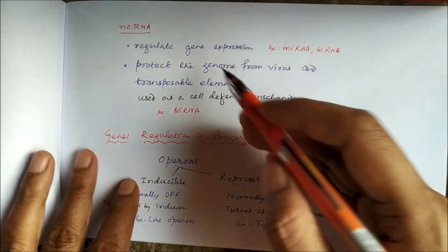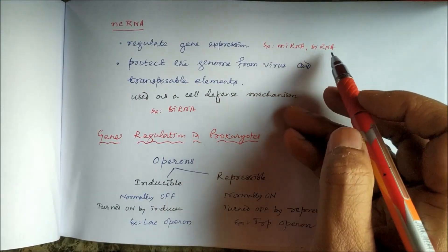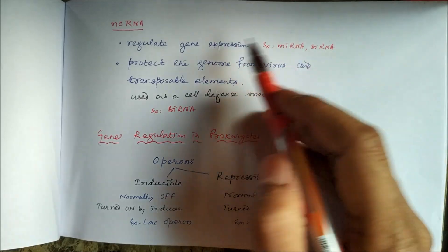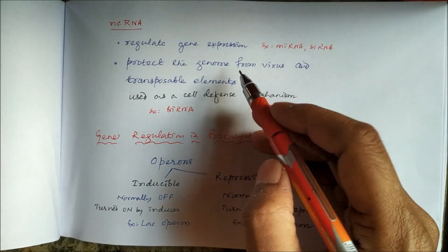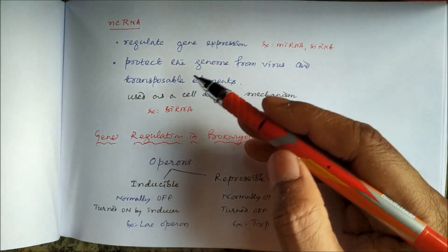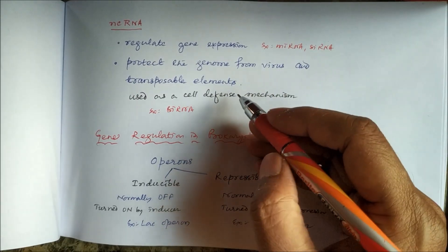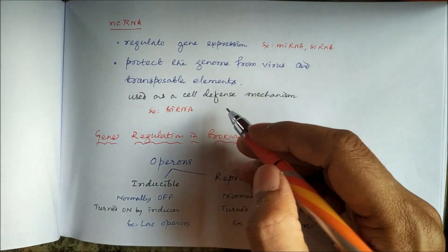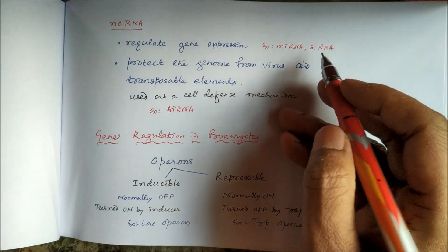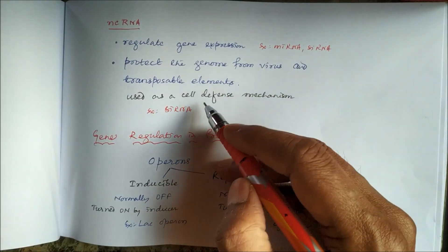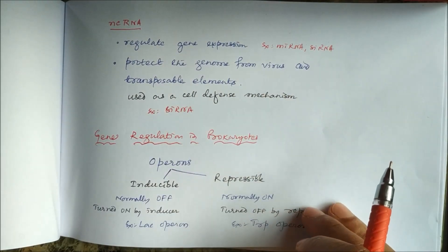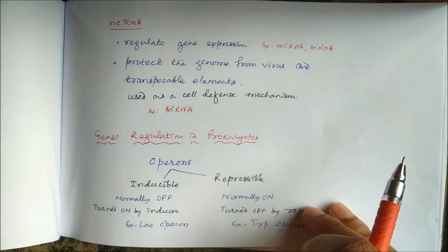In eukaryotic cells, non-coding RNAs such as micro RNA and small interfering RNA (siRNA) regulate gene expression through post-transcriptional gene regulation. These non-coding RNAs can also protect the genome from viruses and transposable elements, serving as a cell defense mechanism. We can administer small interfering RNA as a therapeutic cell defense mechanism.